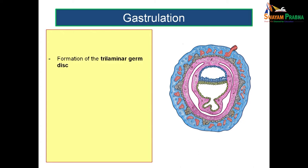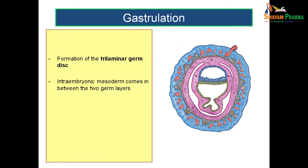First we will see what is meant by gastrulation. The term gastrulation means the formation of trilaminar germ disc. Till the end of second week, we have dealt with the formation of epiblast and hypoblast. During the third week, by the process of gastrulation, the intraembryonic mesoderm comes in between the two germ layers. This is said to be a very highly sensitive stage for teratogenic insult, so we should be very careful when administering drugs or when the pregnant lady gets some infection — this is the stage of maximum teratogenic insult.